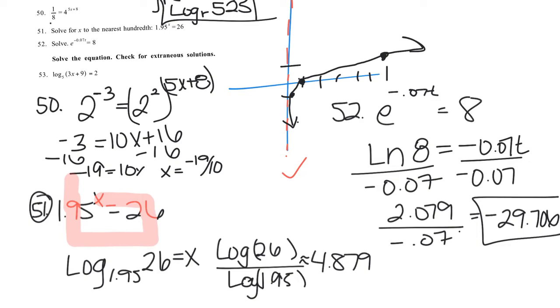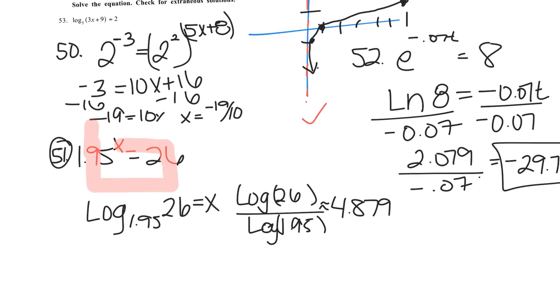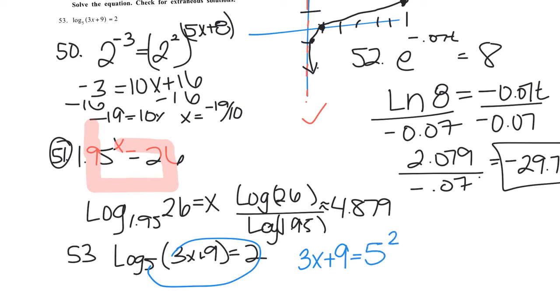And let's see, 53 on this page. We have the log equation, the log base 5 of 3x plus 9 equals 2. So I can make this 5 squared equals what's inside the log. We wrote it like this: 3x plus 9 equals 5 squared. We kept the x on the same side of the equals sign. It doesn't make a difference with equals, but it does with inequalities. And so that's 3x plus 9 equals 25. Subtract 9, 3x equals 16, divide by 3, and x is 16 thirds.